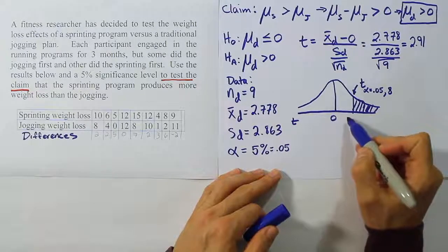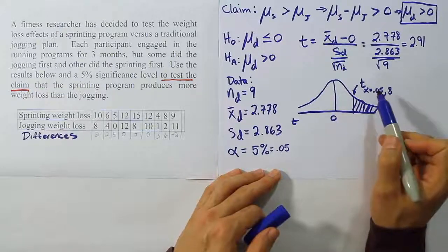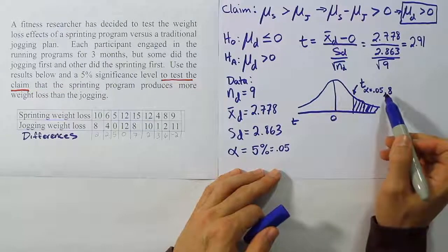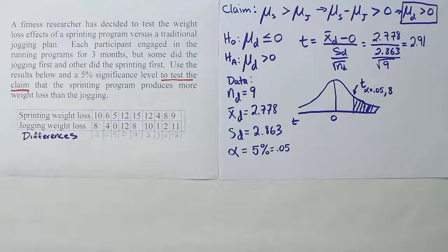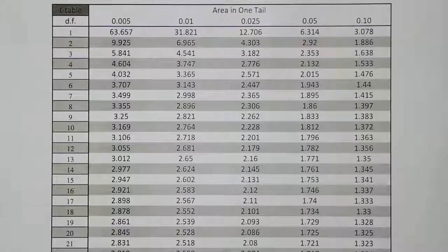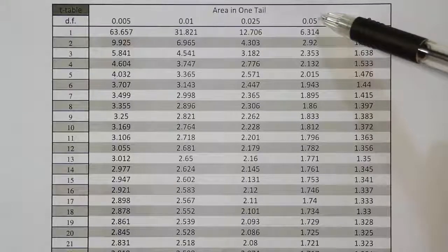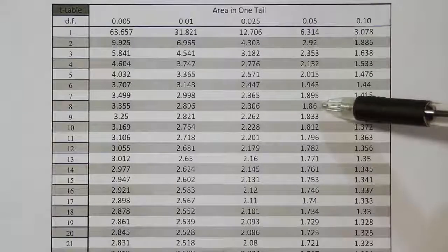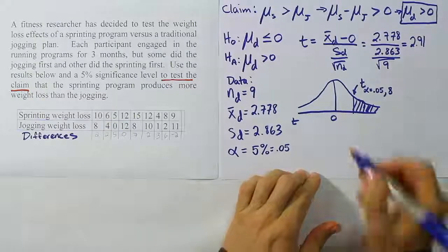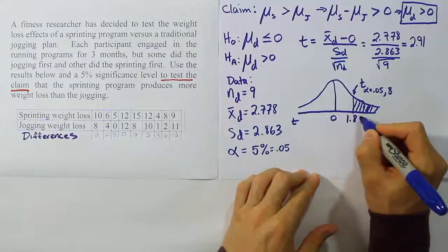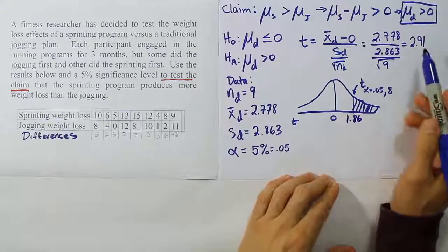Let's go get this T critical value down here. It's going to be found by looking in the 0.05 column of the T table down to degrees of freedom 8. So we're looking at 0.05 and 8 degrees of freedom. We find the answer 1.86. So we found our critical value to be 1.86 from the table.